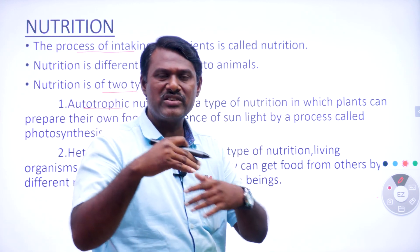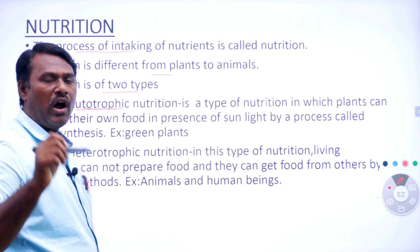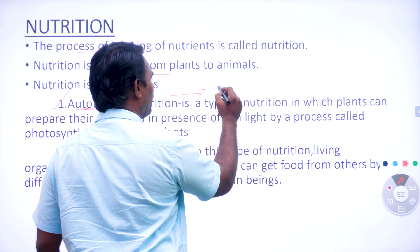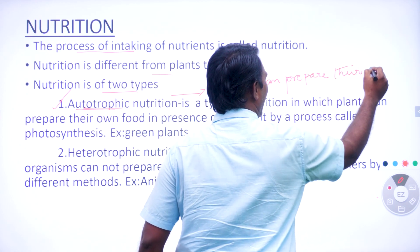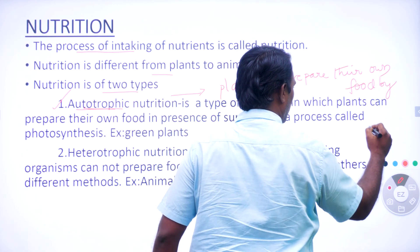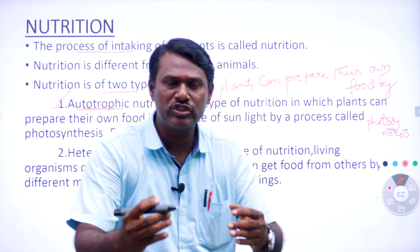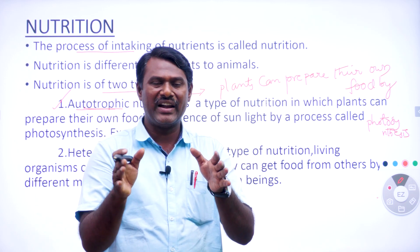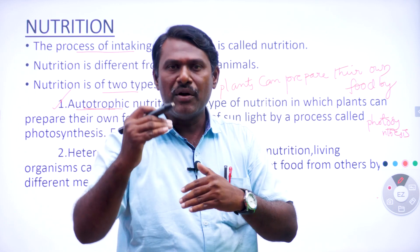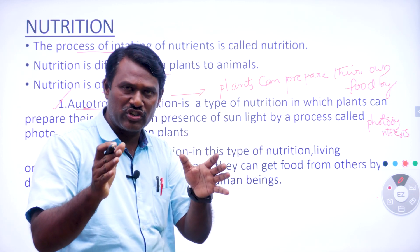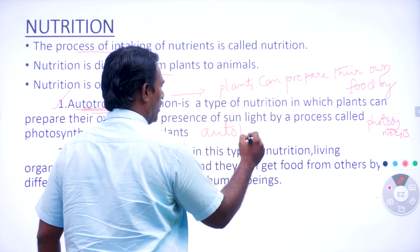Based upon photosynthesis, nutrition is classified into two types. One is called autotrophic nutrition. Autotrophic nutrition can be defined as the type of nutrition in which plants can prepare their own food by a special process called photosynthesis. Such type of nutrition is called autotrophic nutrition. By photosynthesis, living organisms can prepare their own food material. The organisms involved in autotrophic nutrition are called autotrophs.